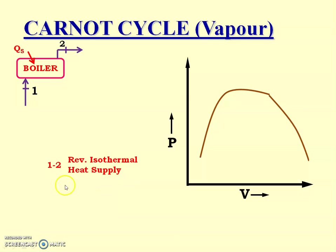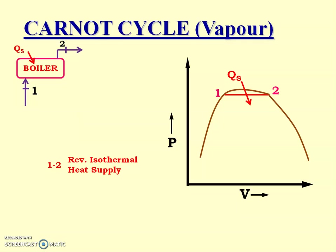Process 1 to 2 is a reversible isothermal heat supply. Isothermal means temperature remains constant and heat is supplied, drawn as a horizontal line. Because in a boiler, pressure also remains constant — as studied in the previous chapter on steam generation — it is a constant pressure process, denoted by the horizontal line for process 1 to 2.